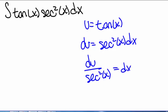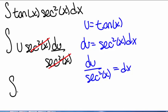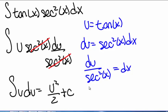That gives us the integral of u times secant squared of x times du over secant squared of x. The secant squared of x's cancel out, and we're left with the integral of u du, which is u squared divided by 2 plus c. Plugging back in for u, we get tangent squared of x divided by 2 plus a constant.